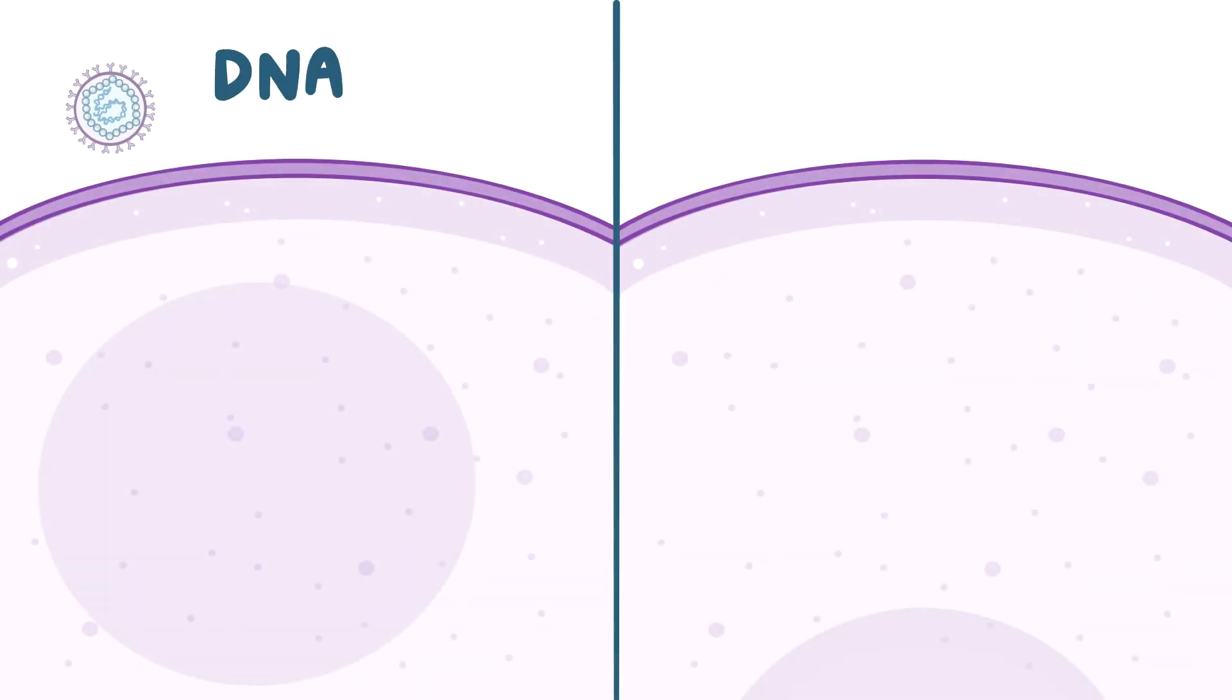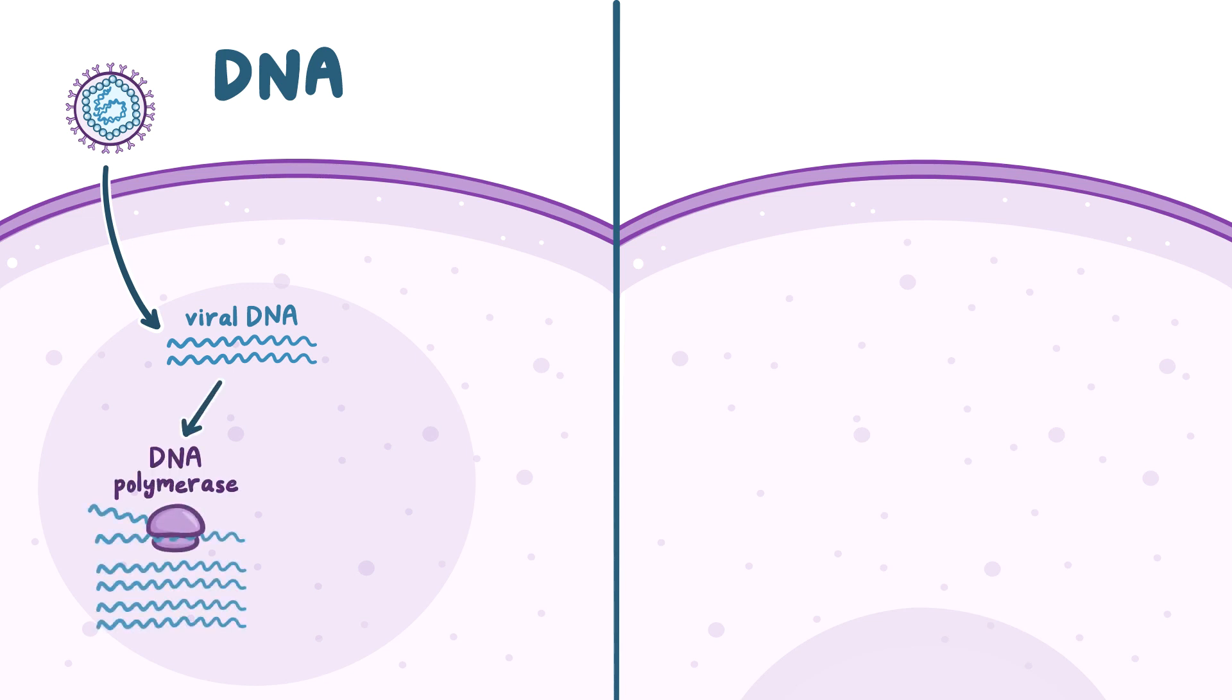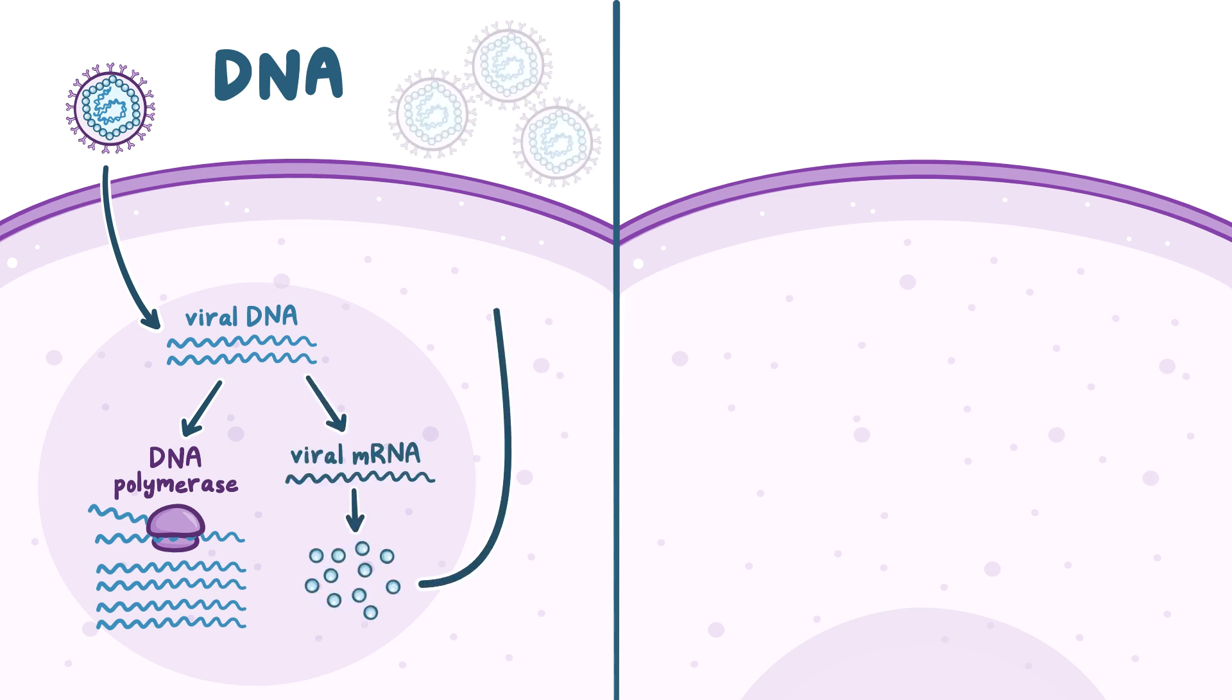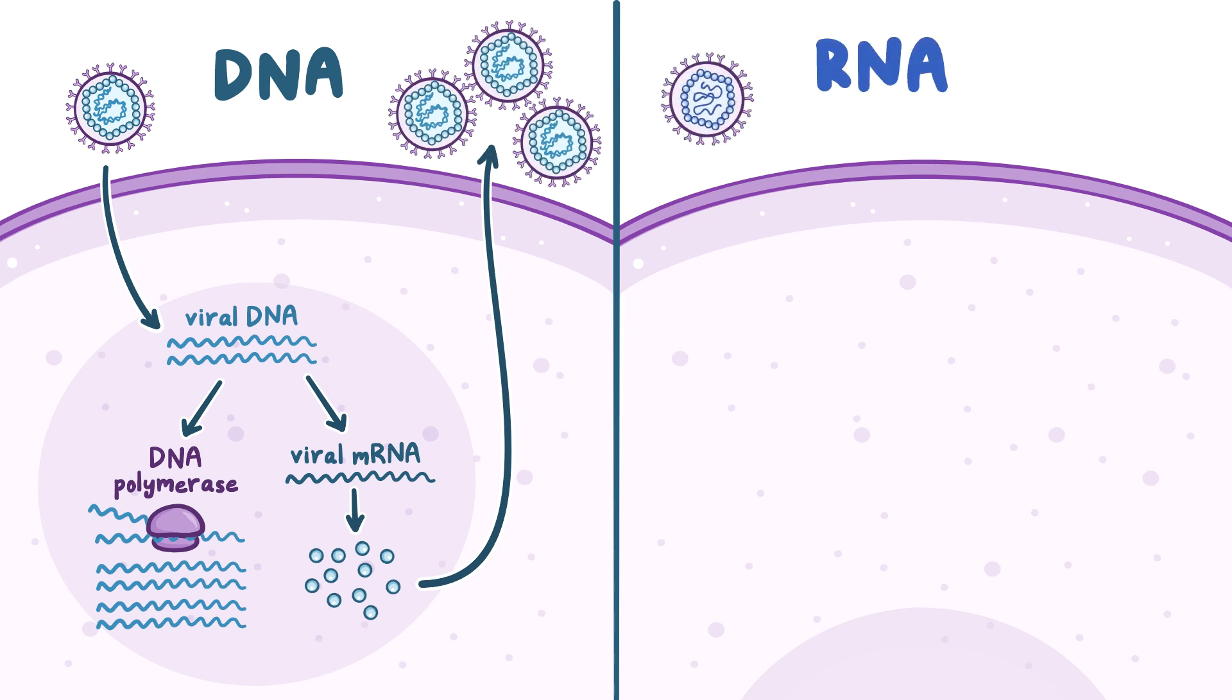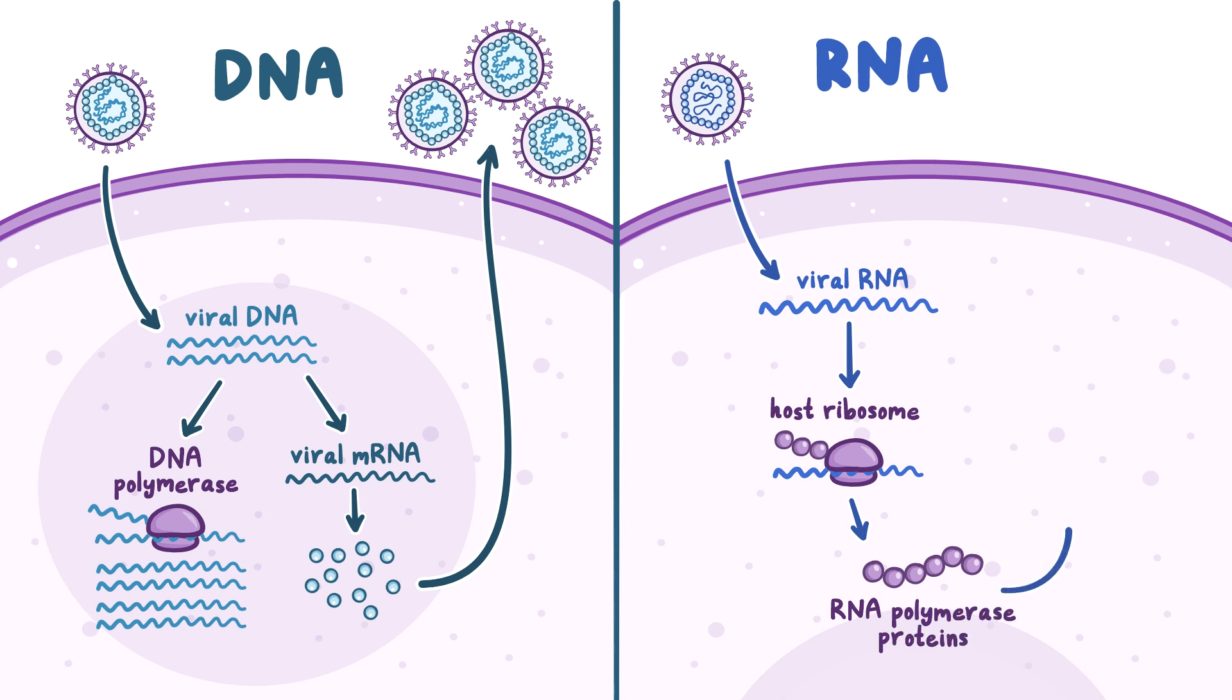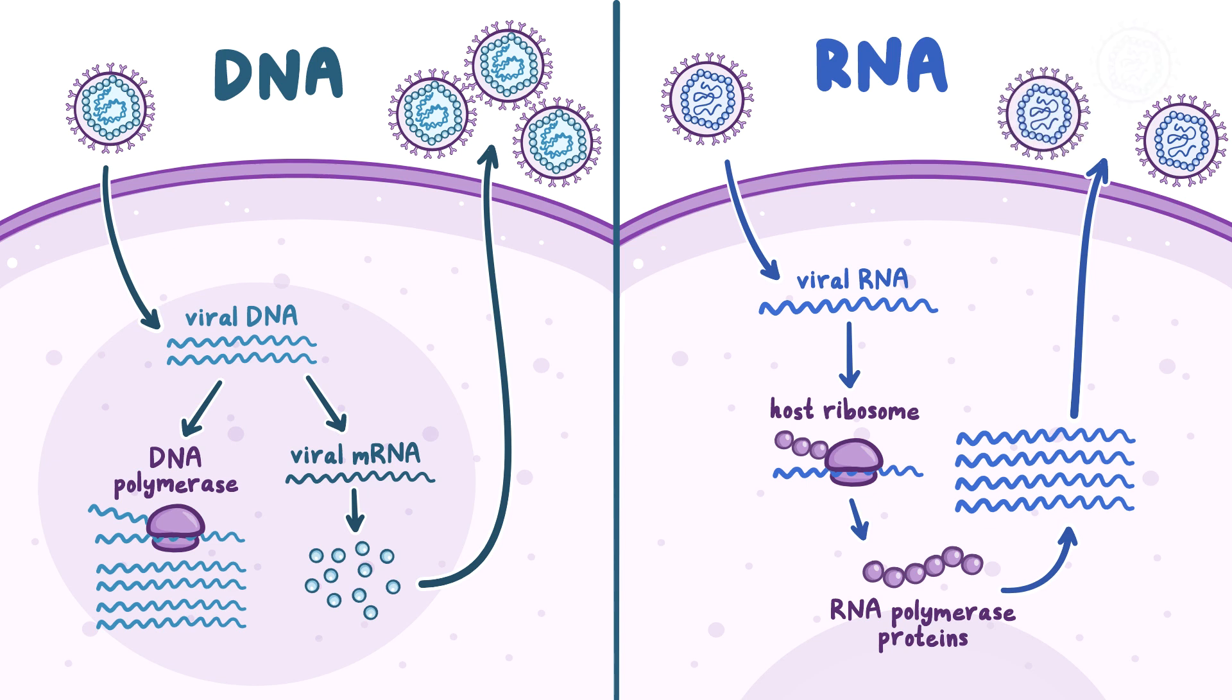In DNA viruses, the viral DNA enters the nucleus and uses the host's DNA polymerase to create more copies of itself as well as viral mRNA that gets translated into viral protein. With RNA viruses, many of them stay in the cytoplasm, where the viral RNA is used by the host's ribosomes to create viral RNA polymerase proteins. These will help replicate the viral genome so more viruses can be created.